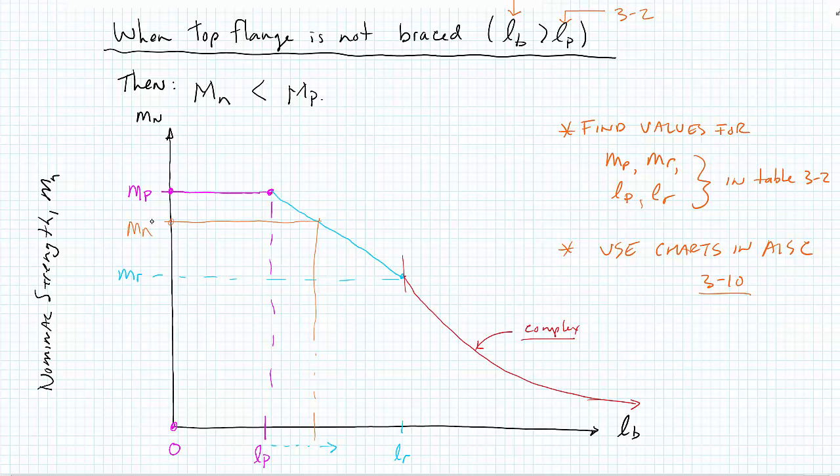The exercise that would be really good to do from here is to take two different shapes, say a W10 by 100 and a W21 by 93, look up their values in table 3-2, and graph the two functions and see how the capacity of one compares to the capacity of the other as a function of unbraced length. Thank you.